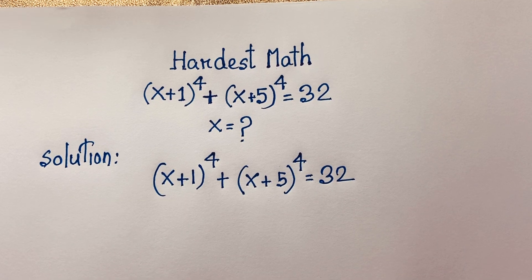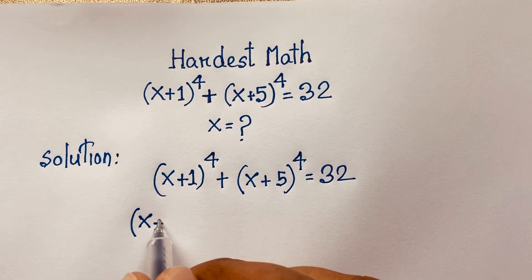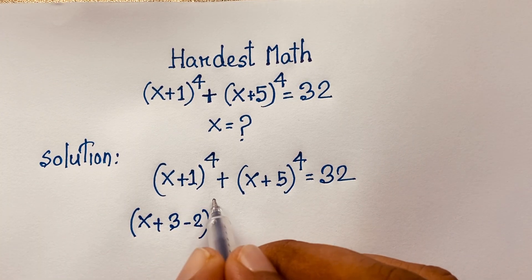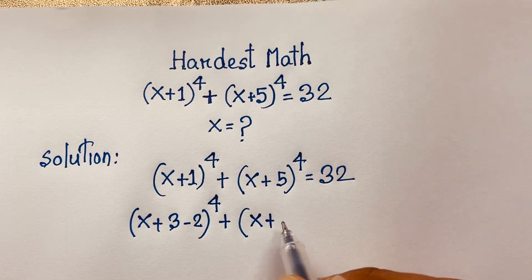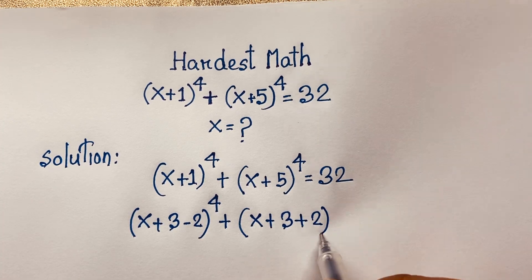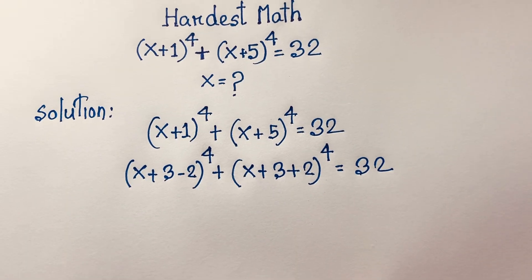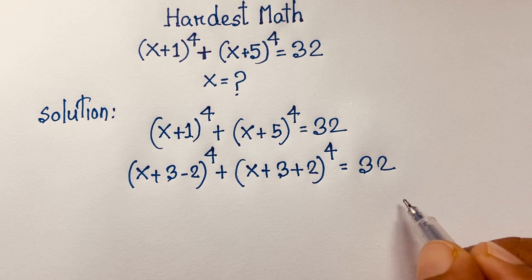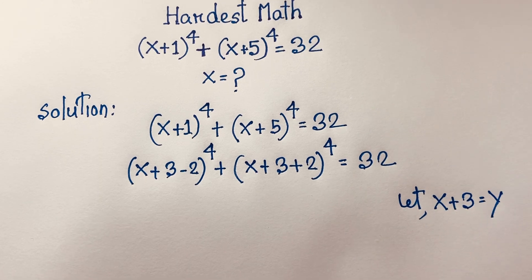Now, notice that x+1 can be written as (x+3) minus 2, since 3 minus 2 is 1 — both are the same. And x+5 can be written as (x+3) plus 2, since 2 plus 3 is 5. So we have (x+3)−2 to the power 4 plus (x+3)+2 to the power 4 equals 32. Let y = x+3, and substitute this value.